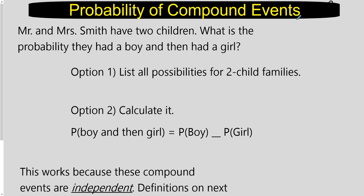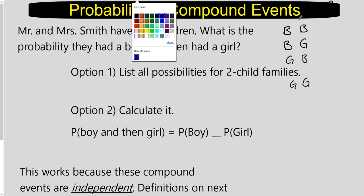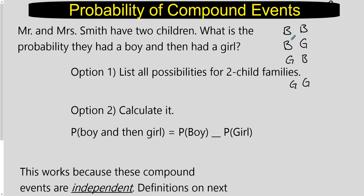One way to figure this out is just to list the options. The first kid could be a boy and the second a boy, or first a boy and second a girl, or first a girl and second a boy, or both kids are girls. Those are the only options for having two children: boy-boy, boy-girl, girl-boy, or girl-girl. One of those four has the probability of having a boy and then a girl — that's one positive outcome out of four total outcomes.